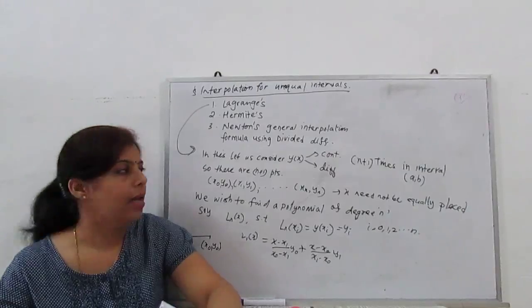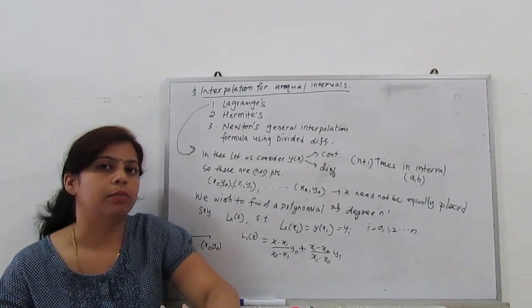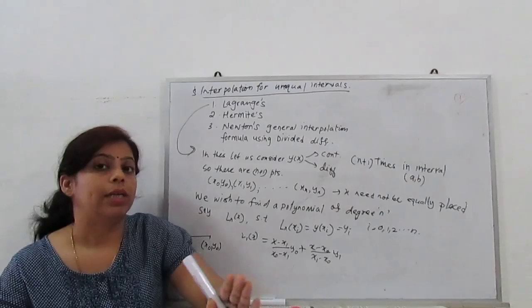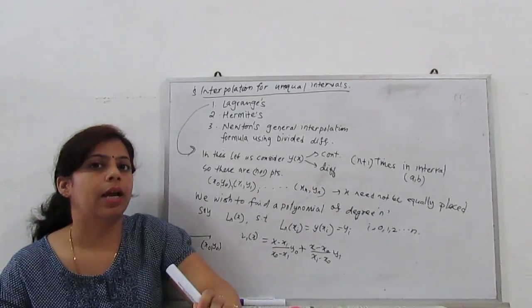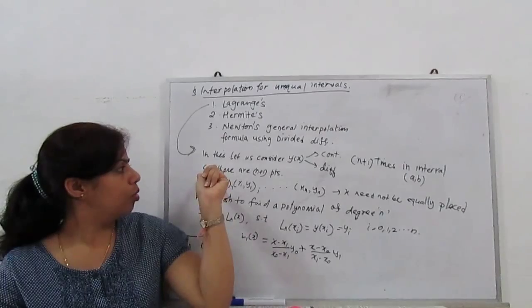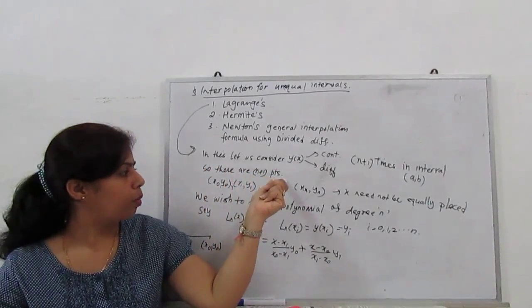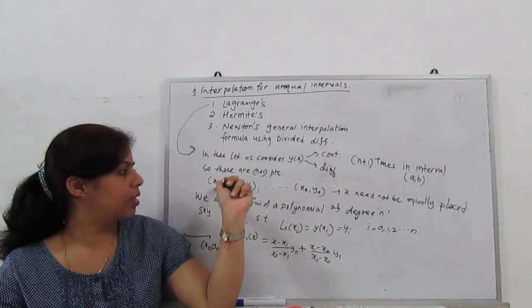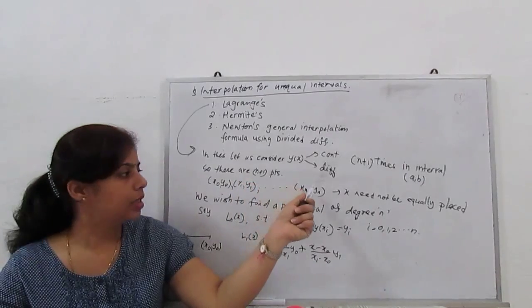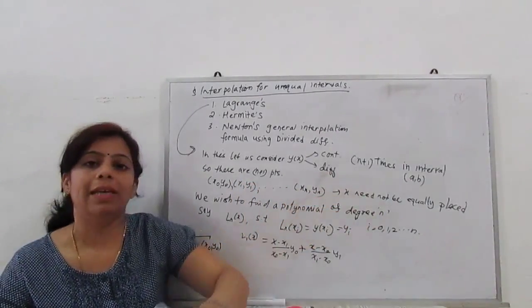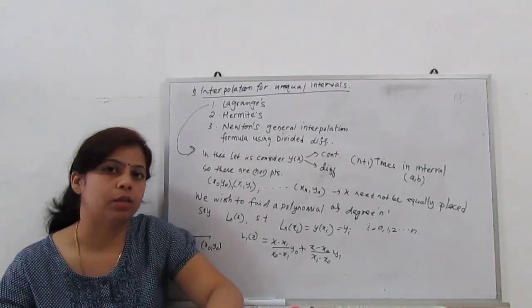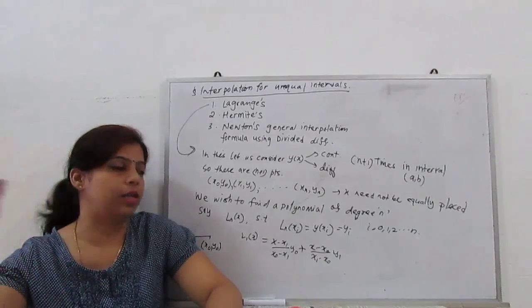If y(x) is a function which is n+1 times continuous and differentiable, with n variables, there are n+1 points x0,y0, x1,y1 till xn,yn where x need not be equally placed.